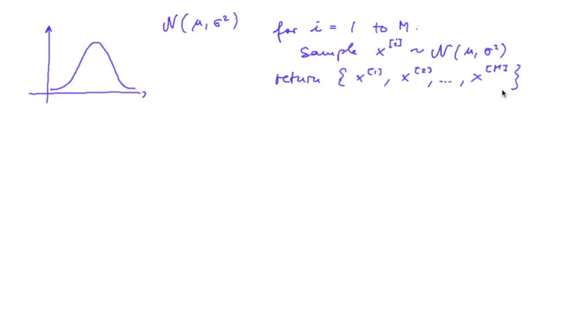then we would just sample them according to the distribution and return the set of samples. On the other hand, if we have a set of particles, we can compute the first and second moment.